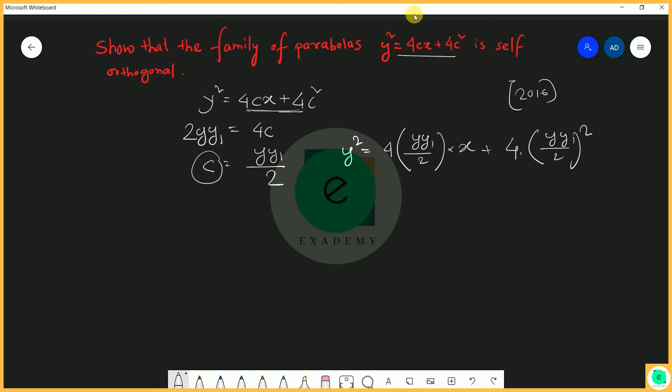So the final answer will be y² = 2xy·y₁ + (y·y₁)². This is the final equation. Now to find the orthogonal trajectory, we replace y₁ with -1/y₁.